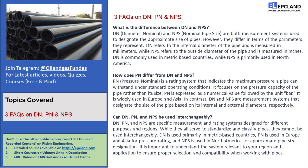DN is primarily used in metric-based countries, PN is used in Europe and Asia for pressure rating, and NPS is used in North America for approximate pipe size designation. It's important to understand the system relevant to your region and application to ensure proper selection and compatibility when working with pipes.